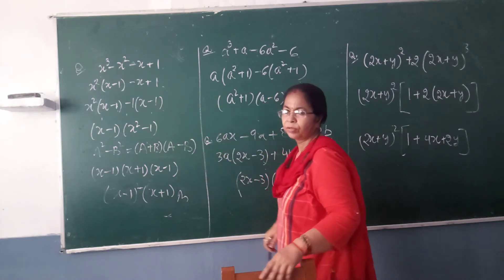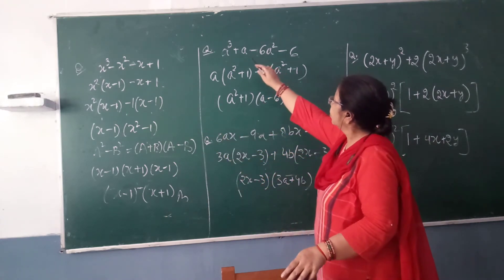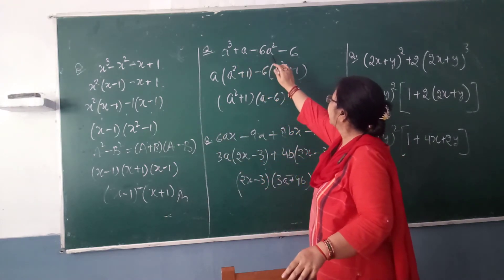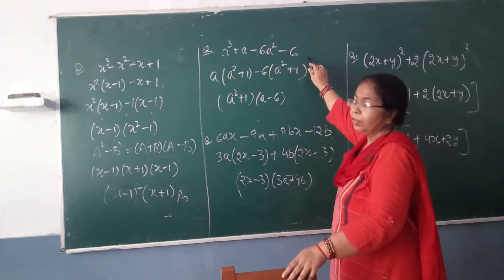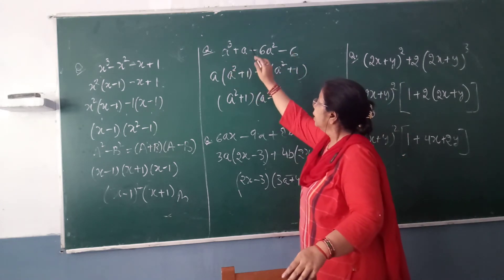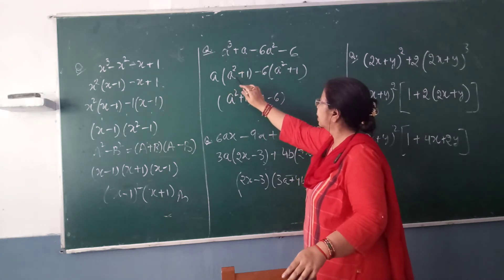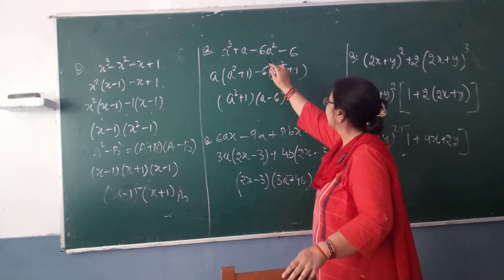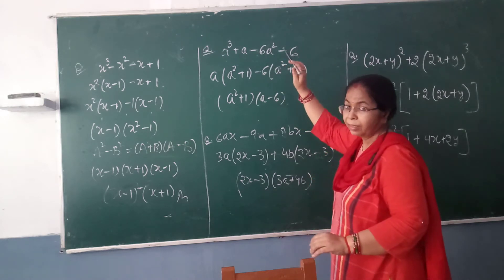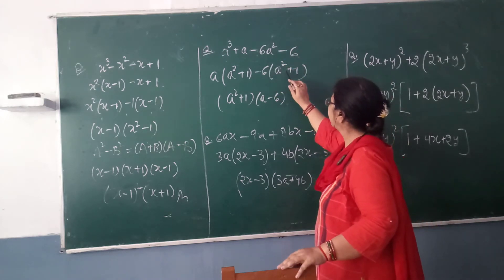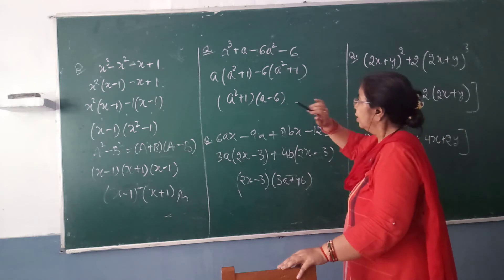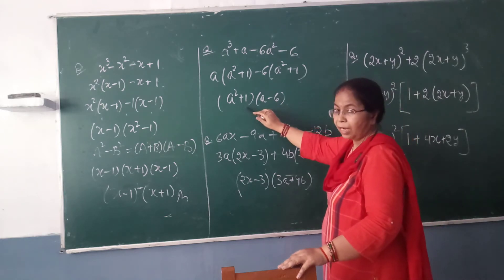Now I am taking one more question: a³ + a - 6a² - 6. What will you take common here? In these two, you can see a. If you take a common, the remaining will come a² + 1. Similarly here, minus 6 common, so a² + 1 is combining. So now our answer is coming (a² + 1)(a - 6) in brackets.